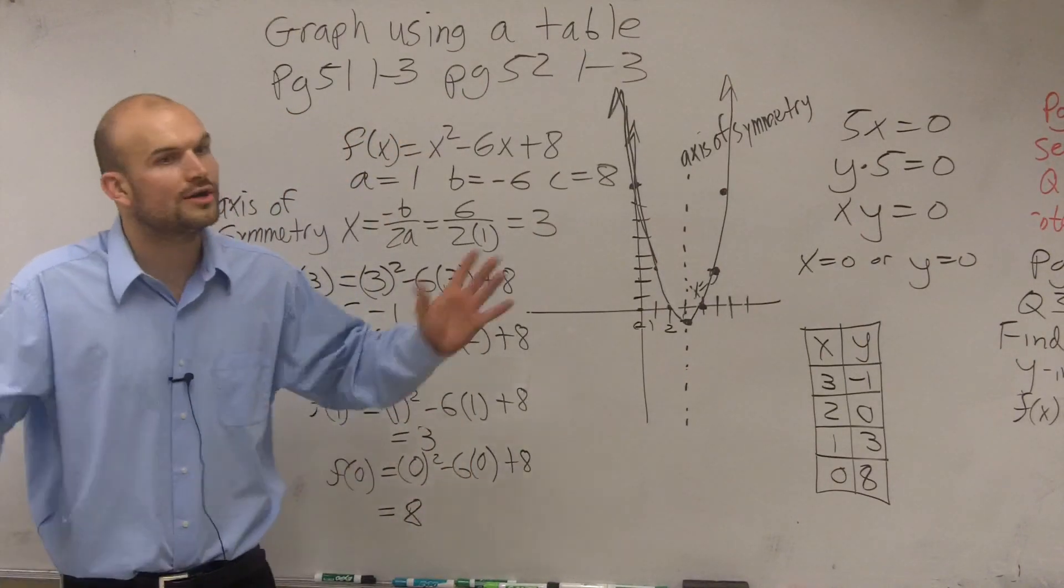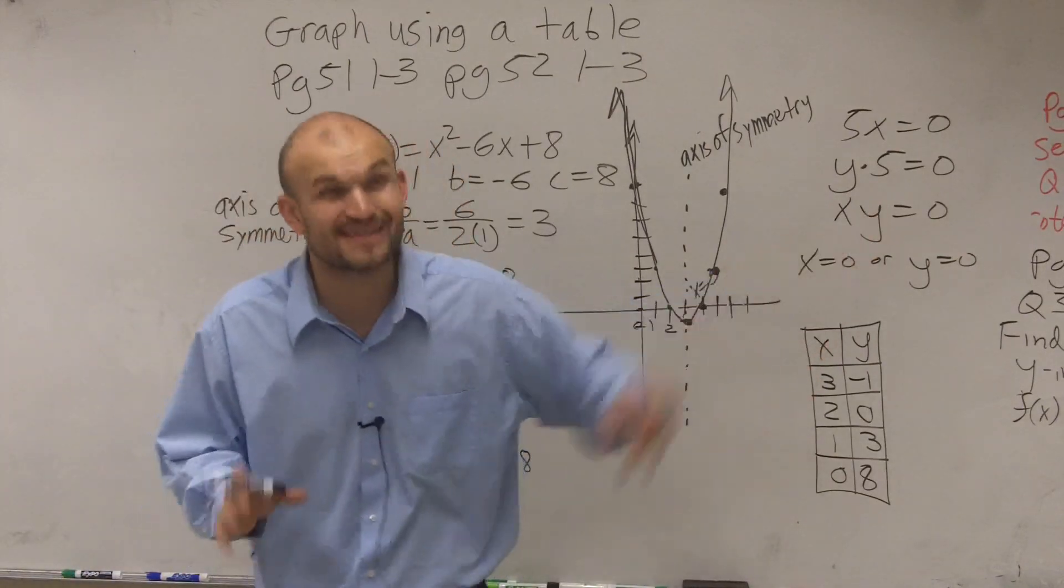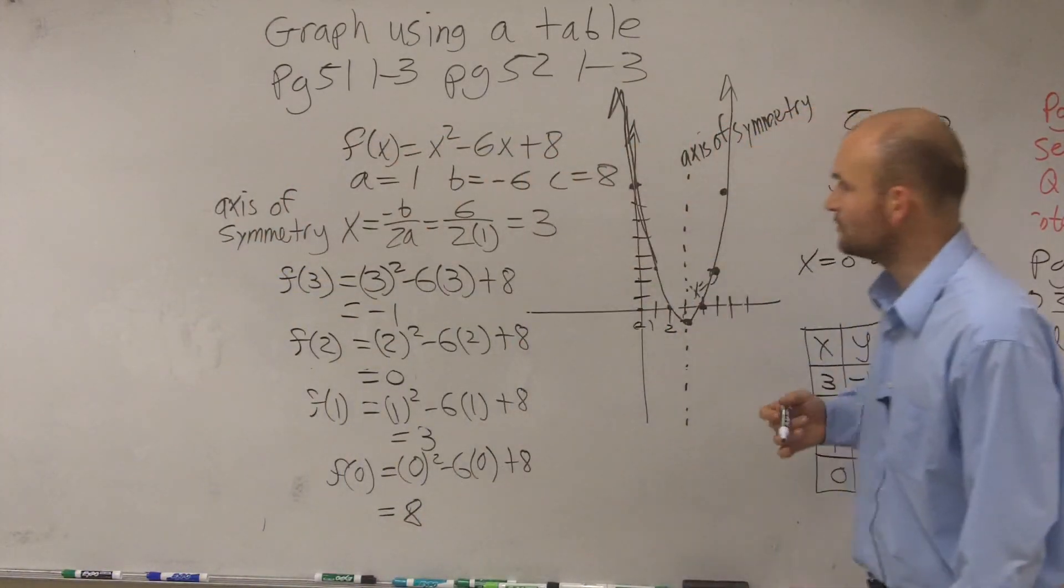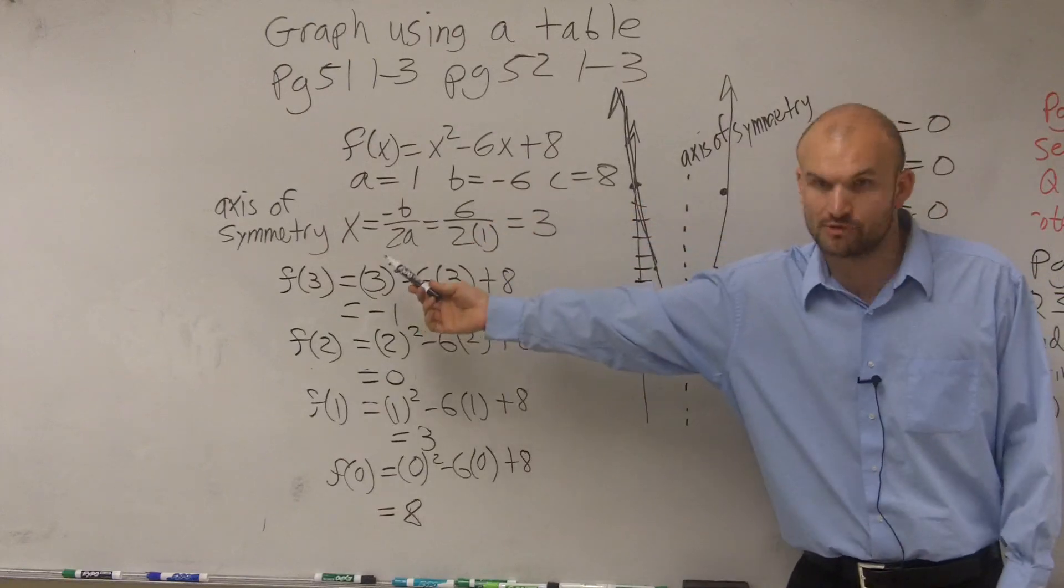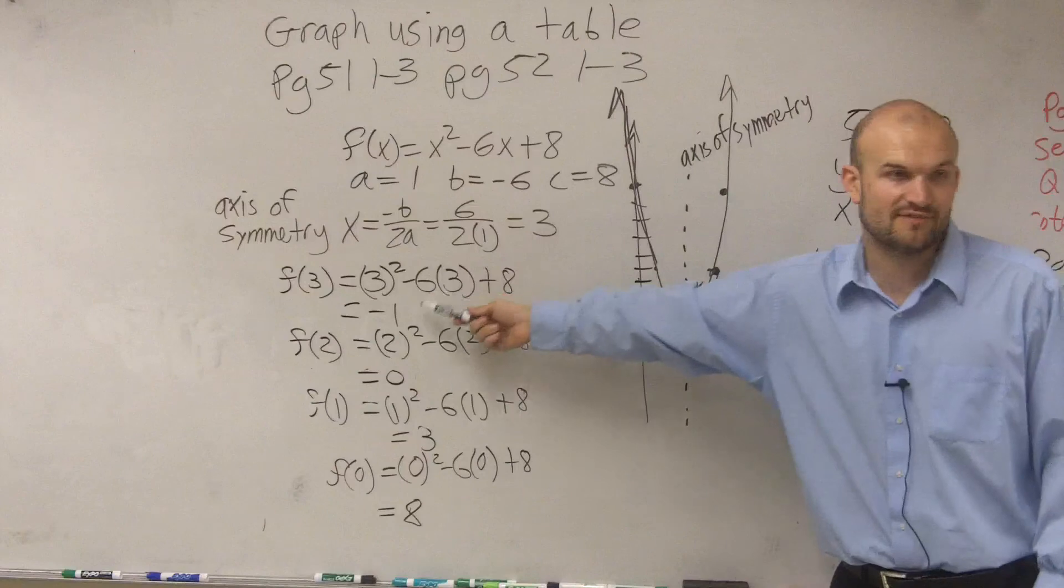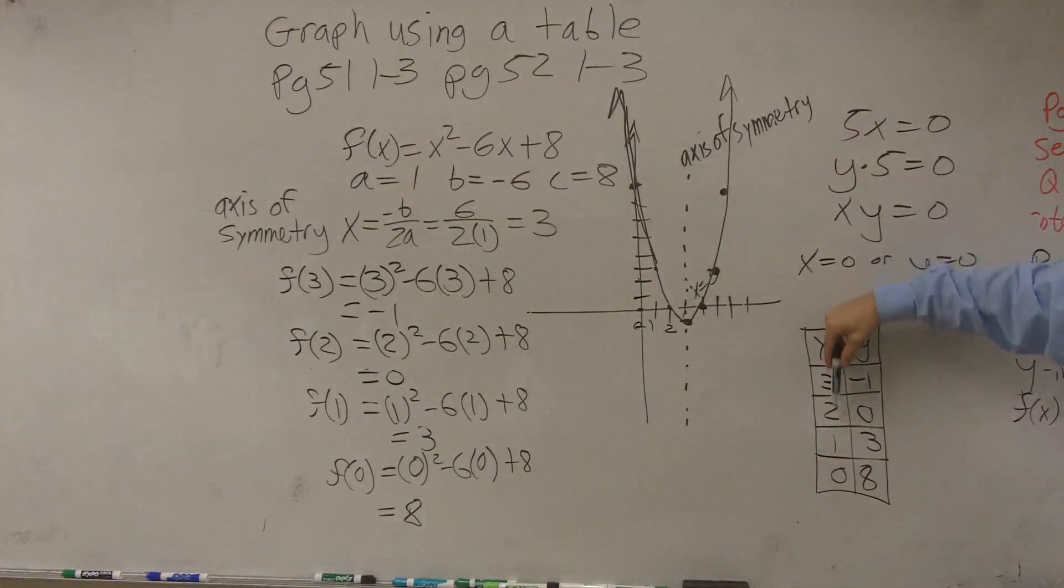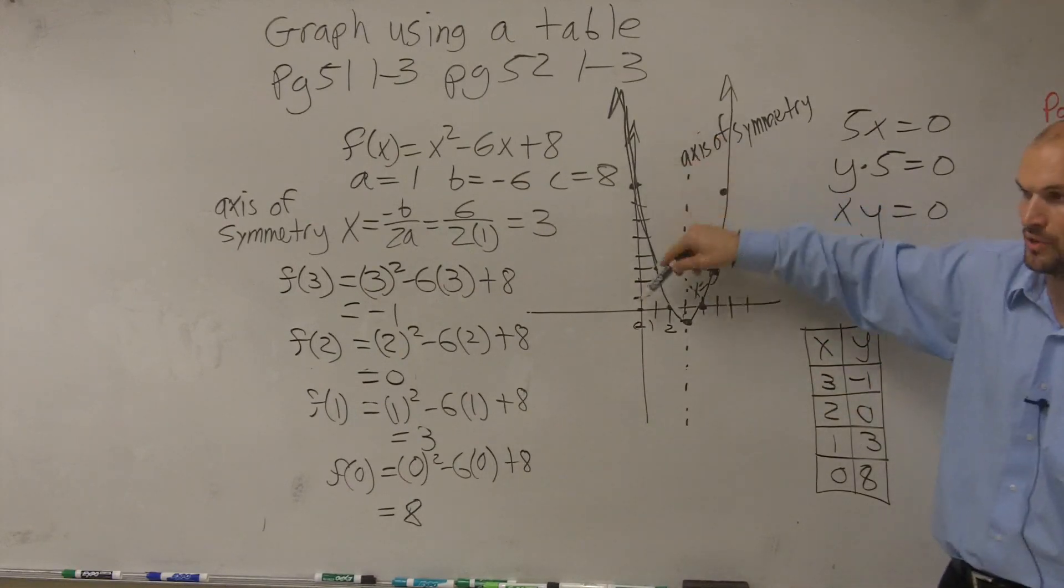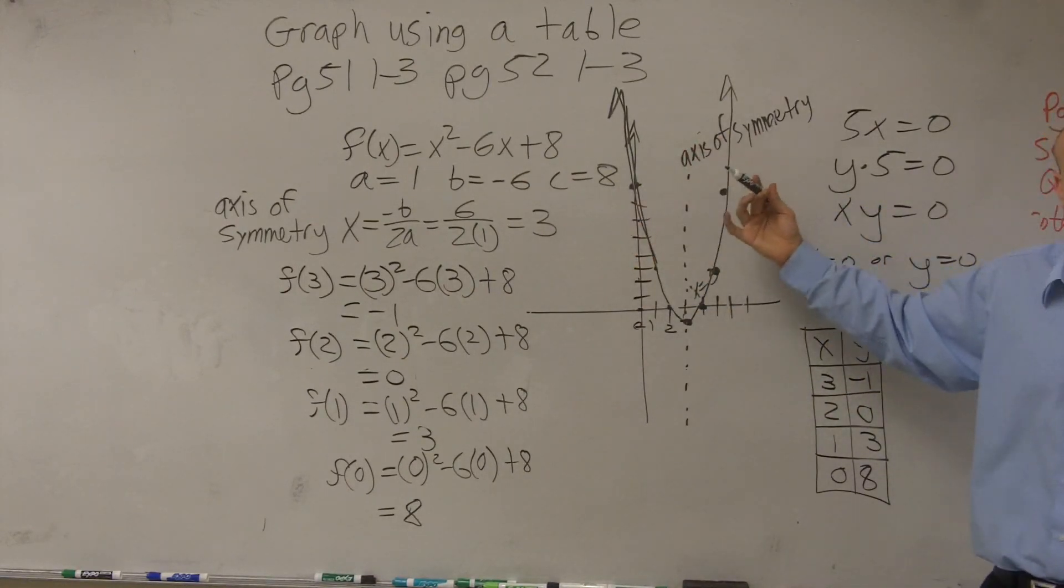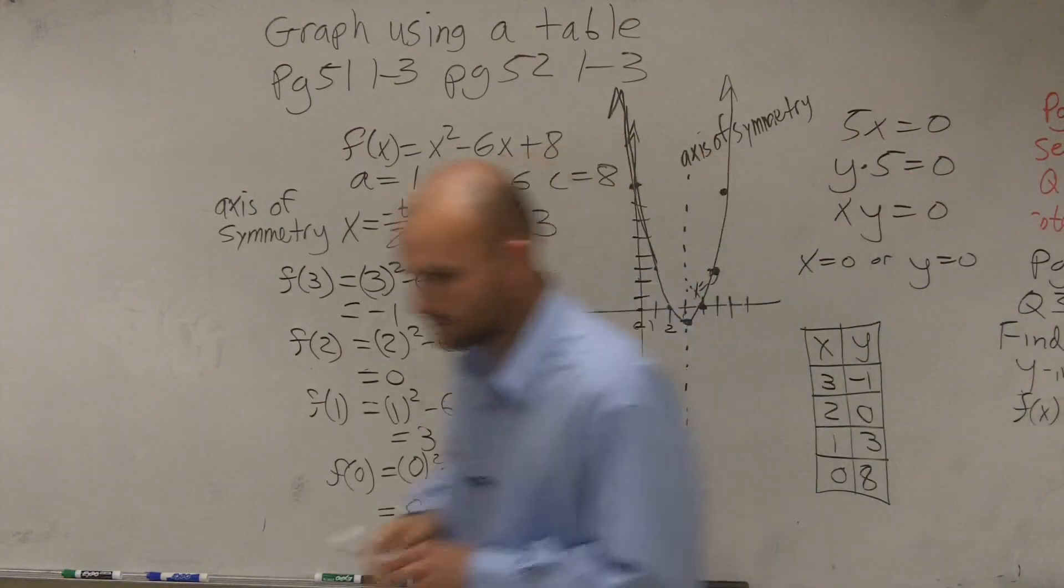So all you're simply going to do for this problem, when I ask you guys to graph - and you guys have six problems that I want you to work on - when I ask you guys to graph, you find the axis of symmetry, which we've been doing over and over again. You plug that point back in to find the vertex. That's your first point. Then you just pick two points to the left or two points to the right. You plot those points. And then you reflect over the axis of symmetry and connect.